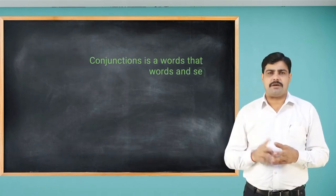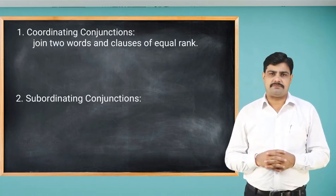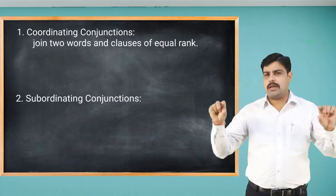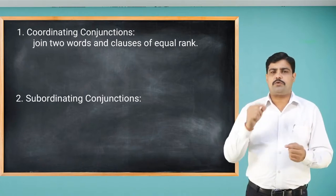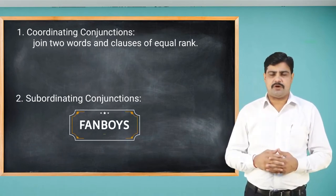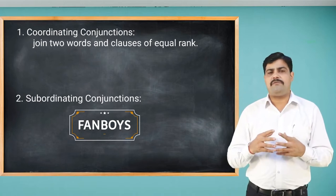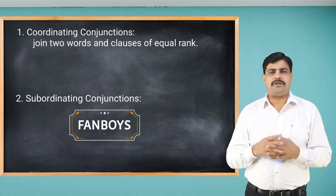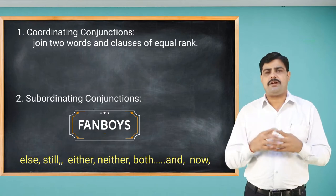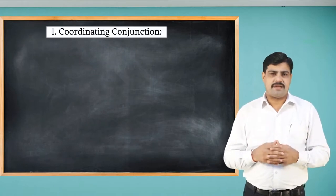The first kind is coordinating conjunctions and the second is subordinating conjunctions. Coordinating conjunctions join two words and clauses of equal rank. Remember all of these through a simple abbreviation: FANBOYS — F for 'for', A for 'and', N for 'nor', B for 'but', O for 'or', Y for 'yet', S for 'so'. Other conjunctions include else, still, either, neither, both, and now.